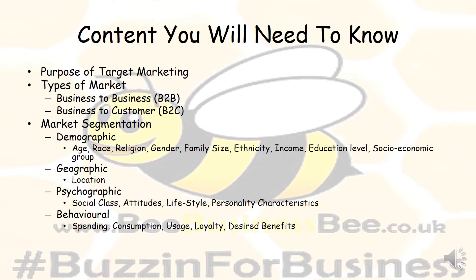You could also look at ACORN profiling. You need to understand geographic segmentation, which could be done by location; psychographic segmentation, which covers social class, attitudes, lifestyles and personal characteristics or traits; and behavioural segmentation — things like spending, consumption, usage, loyalty and the desired benefits you wish to get.